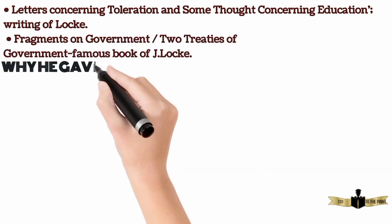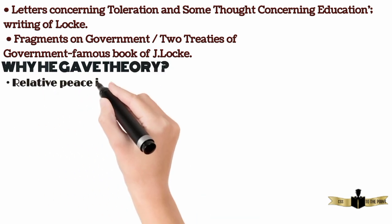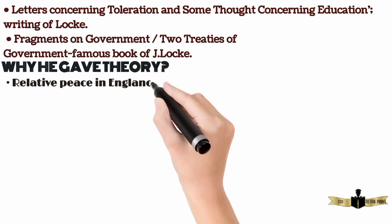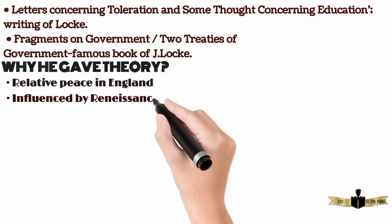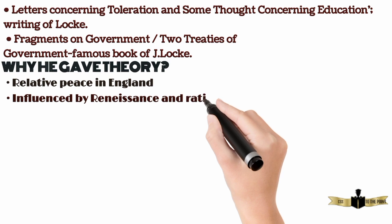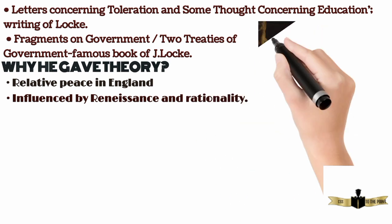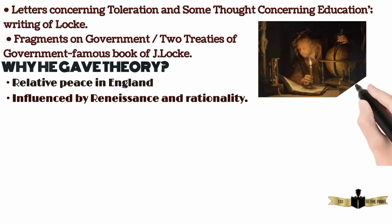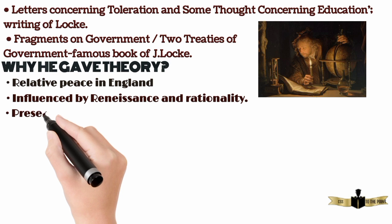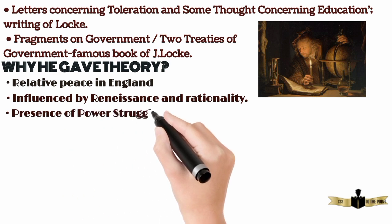Why did he give his theory? 1. Relative peace in England. 2. Influenced by Renaissance and Rationality. 3. Presence of power struggle.